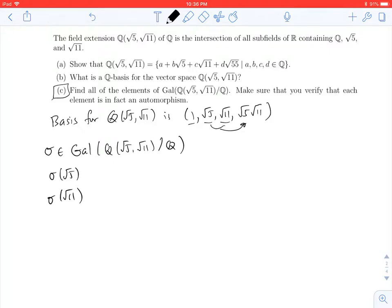And using the exact same argument that we used when looking at Q adjoin root 7, we see that sigma applied to root 5 is going to be plus or minus root 5, and sigma applied to root 11 will be plus or minus root 11. And so, in total, there's going to be four different combinations.